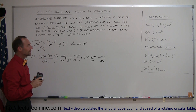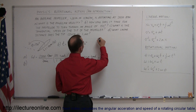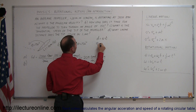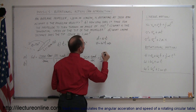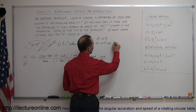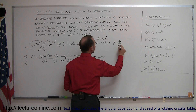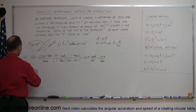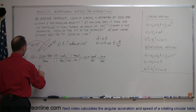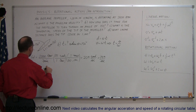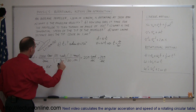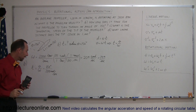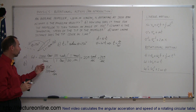For Part B, we use the rotational equivalent of the distance-rate equation. Just as distance equals velocity times time, the rotational equivalent is theta equals omega times time. Solving for t gives us t equals theta divided by omega. The angle given is 150 degrees and the omega we found in Part A was 209 radians per second. However, we cannot divide yet because we must convert from degrees to radians.